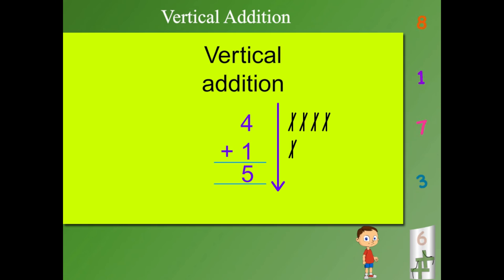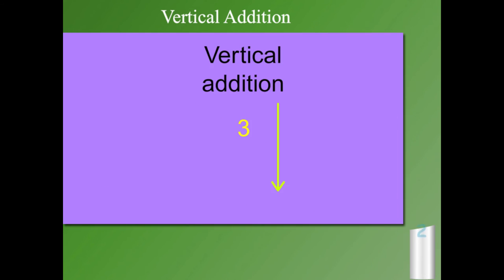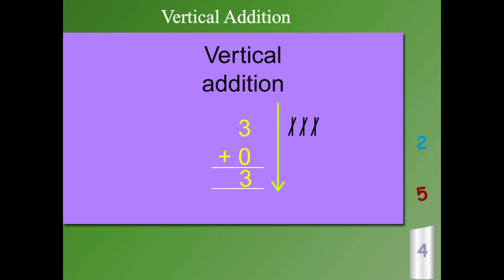When you write numbers one below the other and add, it is called vertical addition. How much is 3 plus 0? It is 3.